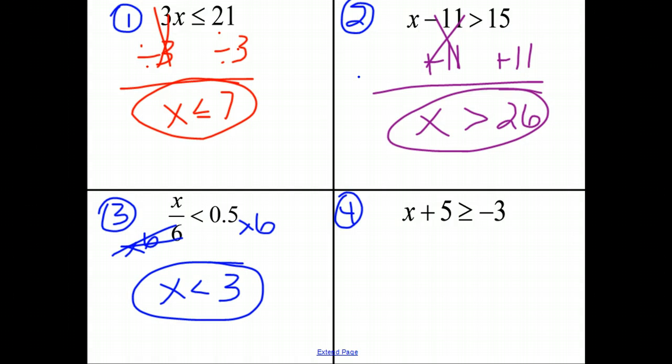And finally, for number 4, we are adding 5, so to undo that 5 and isolate the variable, we need to subtract 5 away from both sides. The two 5s cancel out, leaving us just an x. x is greater than or equal to negative 3 minus 5. If we keep change change, as we did in our lesson on subtracting integers, it becomes negative 3 plus a negative 5. And finally, x is greater than or equal to negative 8.